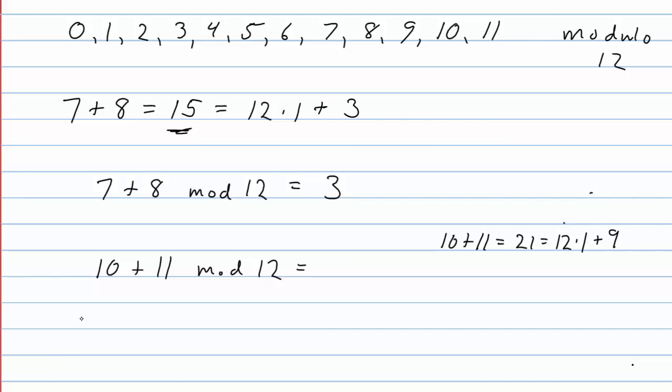So when we're doing 10 plus 11 modulo 12, our answer is the remainder. We take 10 plus 11, we see the sum, we divide by 12, and we take the remainder. That's the answer. So 10 plus 11 is 9. And notice that's an element in our list. Our list 0, 1, 2, 3, 4, 5, 6, up to 11. 9 is one of those elements, so that's an acceptable answer.